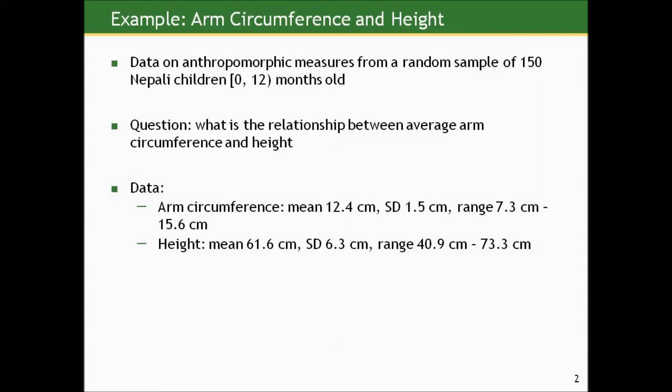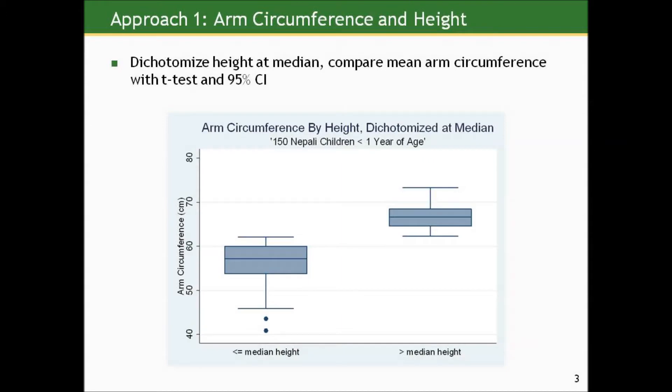Here are some summary statistics. The mean arm circumference of these 150 children is 12.4 centimeters with a standard deviation of 1.5, ranging from 7.3 to 15.6 centimeters. For height — which technically in younger children should be called length, but I'll call it height for consistent terminology — the mean was about 62 centimeters, with a standard deviation of 6.3 centimeters, and a range from 40.9 to 73.3 centimeters. So there's variation in both measures.